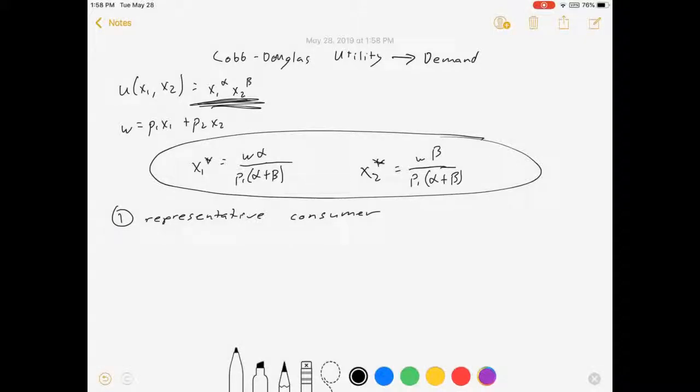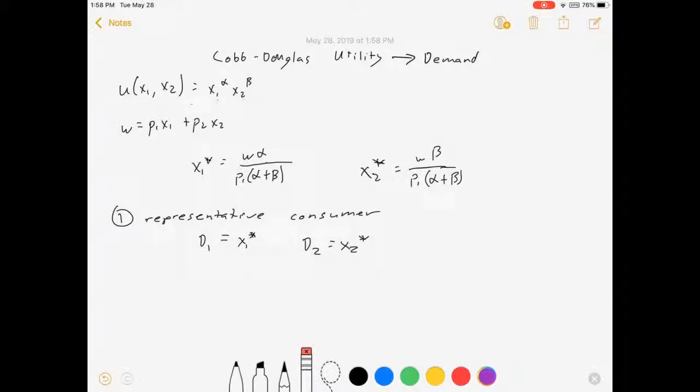And so the demand functions for, actually let's write it this way, the demand function for good one is x1 star and the demand function for good two is x2 star. Very simple, already done.